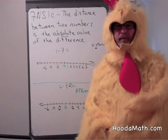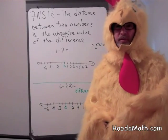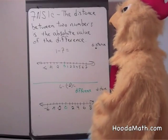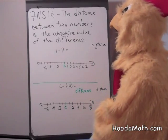A mature female chicken is called a hen. The distance between two numbers is the absolute value of the difference.